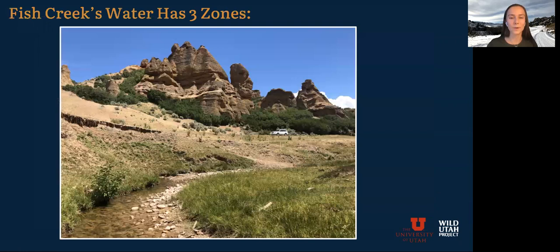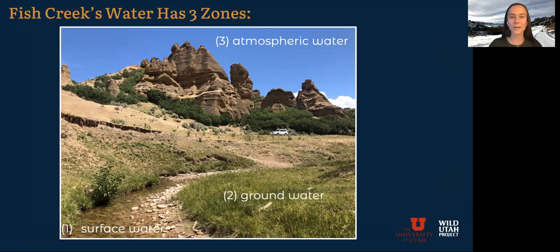When I think about the water at Fish Creek, I think about it existing in three zones. The first is the surface water — the stuff we see flowing in the stream, the stuff that most of us care about a lot. The second is the groundwater, which is also very important because it interacts with the surface most of the time. And the third is atmospheric water — so clouds, humidity, anything in the air.